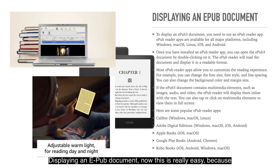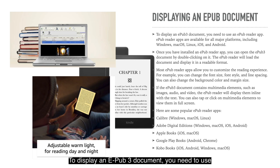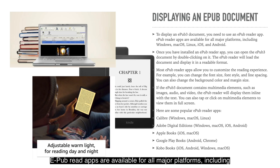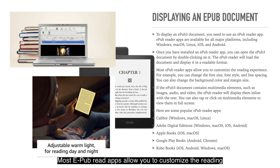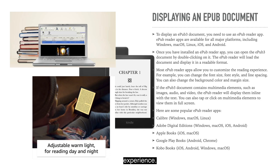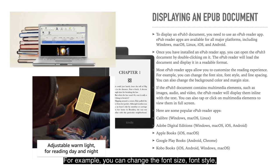Displaying an EPUB document is really easy because there are a lot of free document readers around. To display an EPUB3 document, you need to use an EPUB reader app. EPUB reader apps are available for all major platforms including Windows, macOS, Linux, iOS, and Android. Once you've installed an EPUB reader app, you can open the EPUB3 document by double-clicking on it. The reader will load the document and display it in a readable format. Most EPUB reader apps allow you to customize the reading experience — for example, you can change the font size, font style, line spacing, background color, and margin sizes. And that's EPUB.